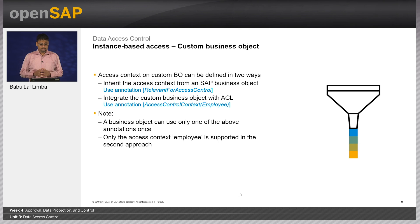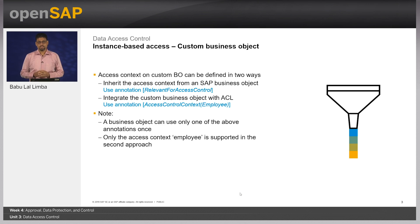Please note a few things about these approaches. A business object can use only one of the above annotations, and only once. In the second approach, you can integrate the BO to ACL; however, as of now only the access context employee is supported for Business ByDesign. If you want to use another access context, you should go for approach one. The steps are nearly the same, just a bit of scripting is required to manage the data.